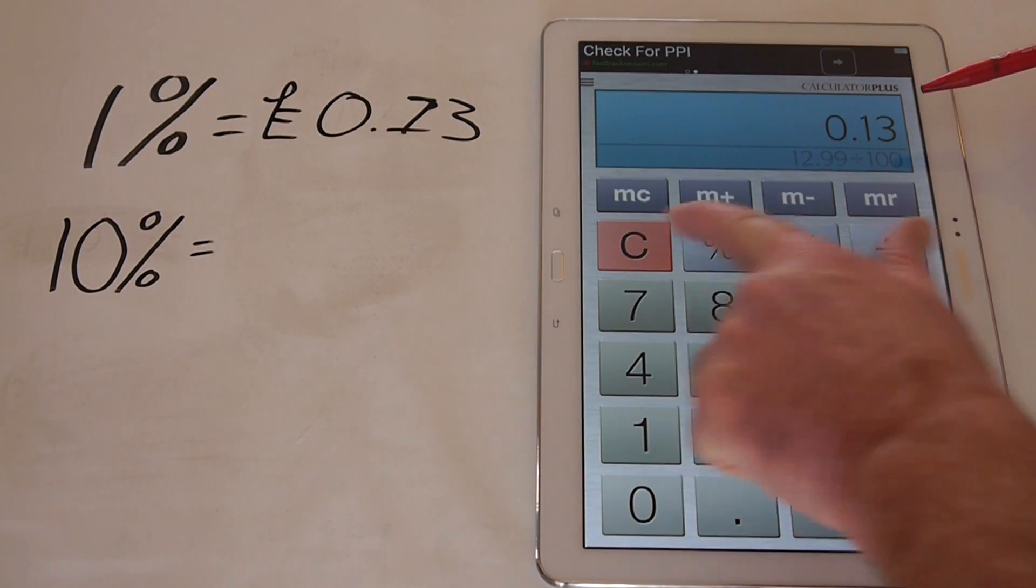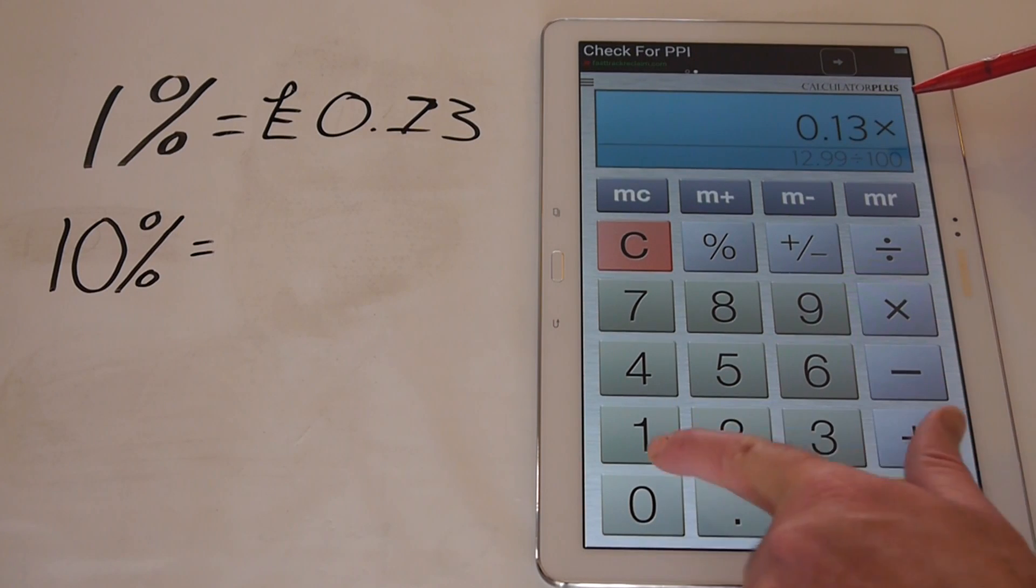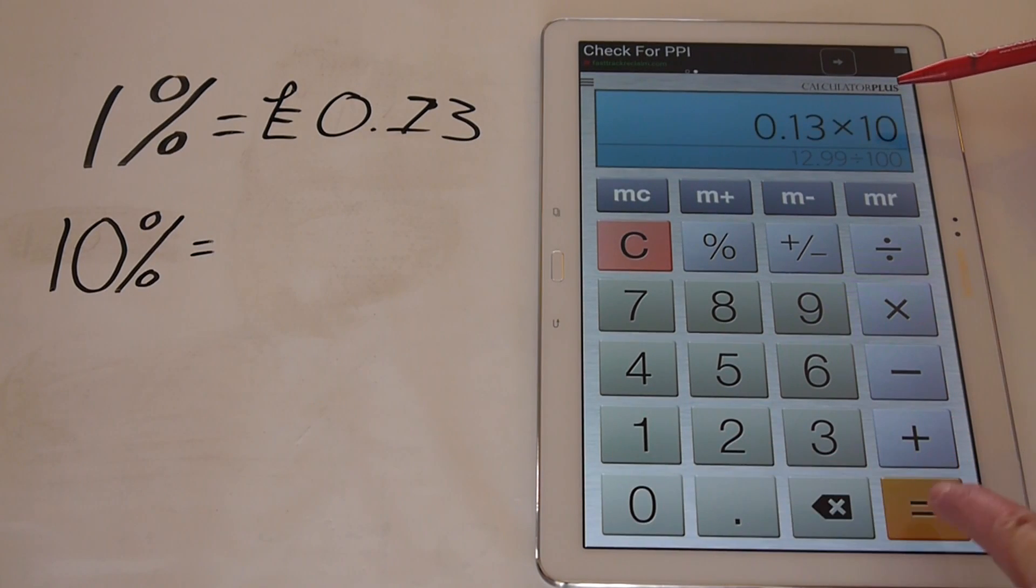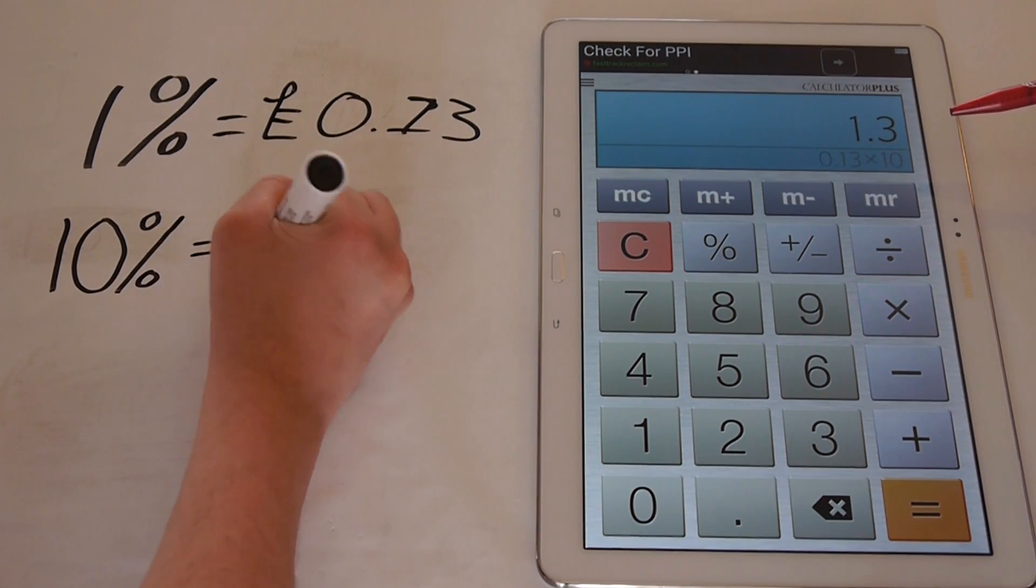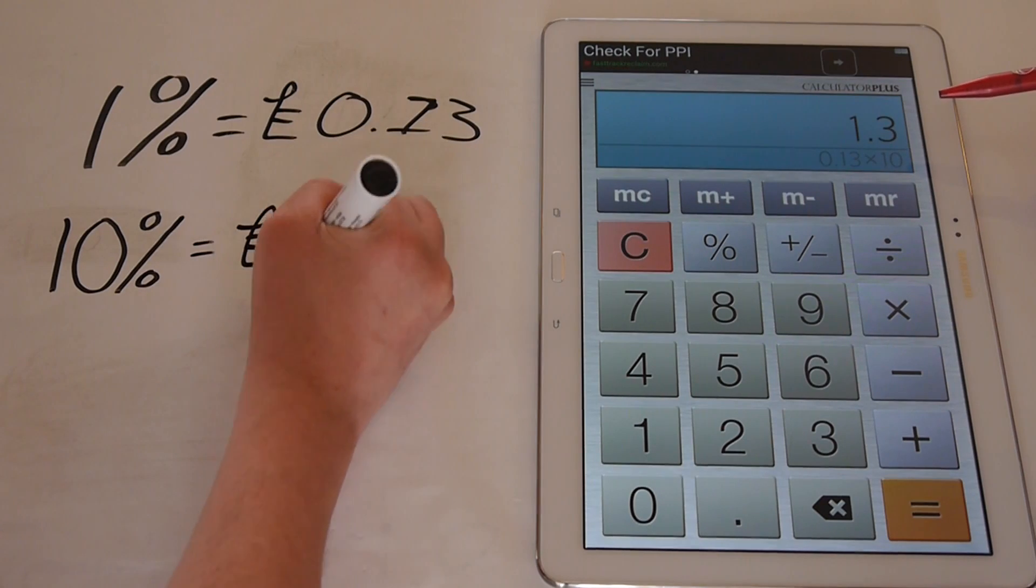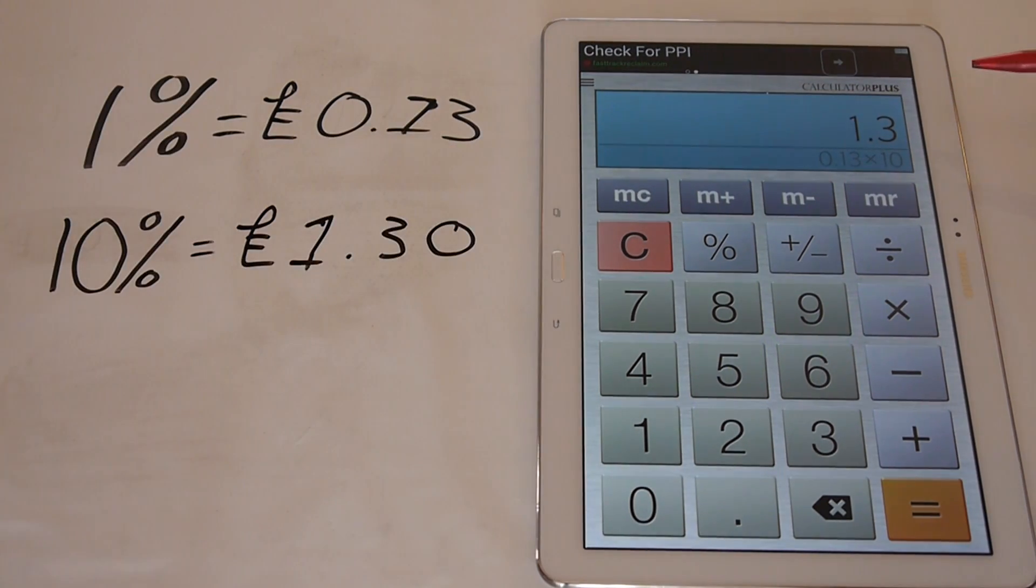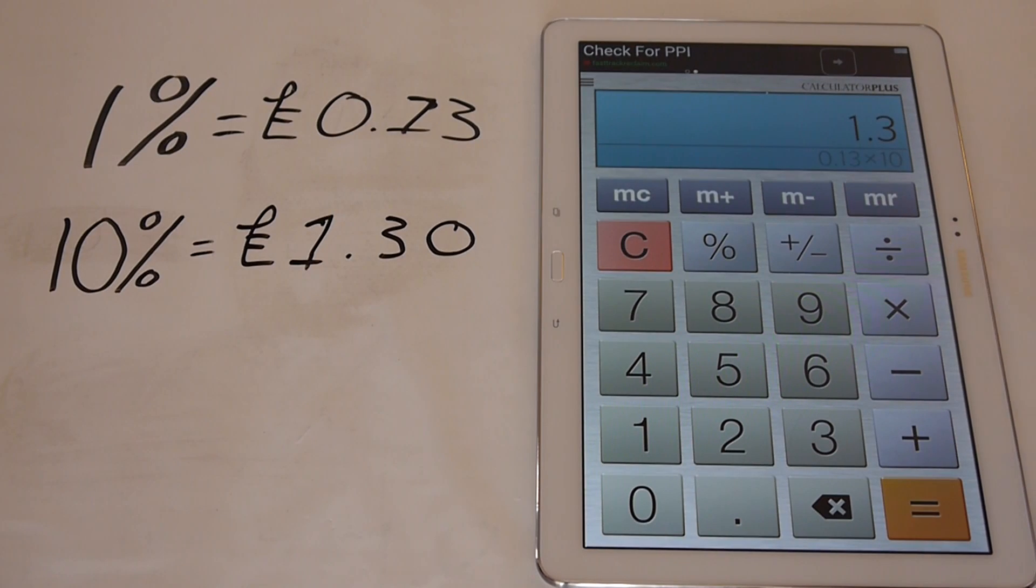Okay, so I'm going to times that by the 10, 0.13 times 10, and that is equal to 1.3 of a pound. So 10% of £12.99, rounded up, is 1.30 of a pound, or 130 pennies. It expresses a pound as £1.30.